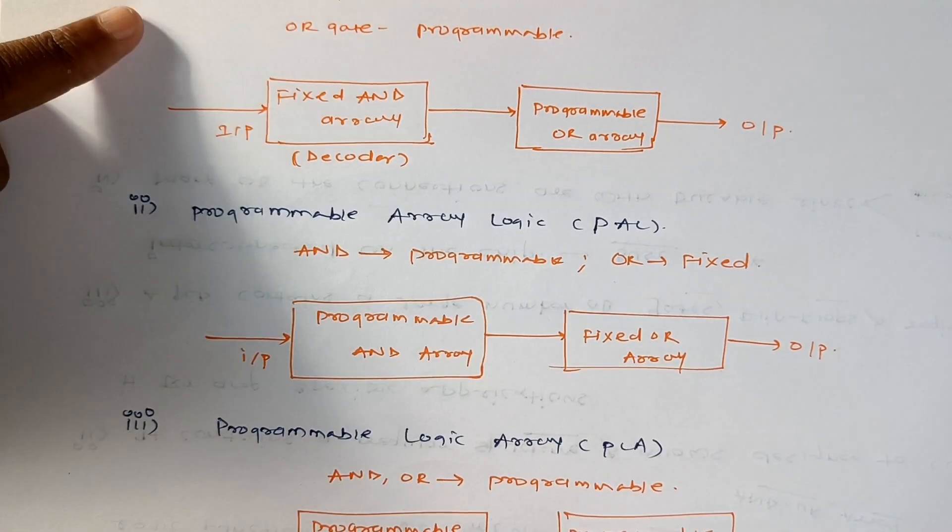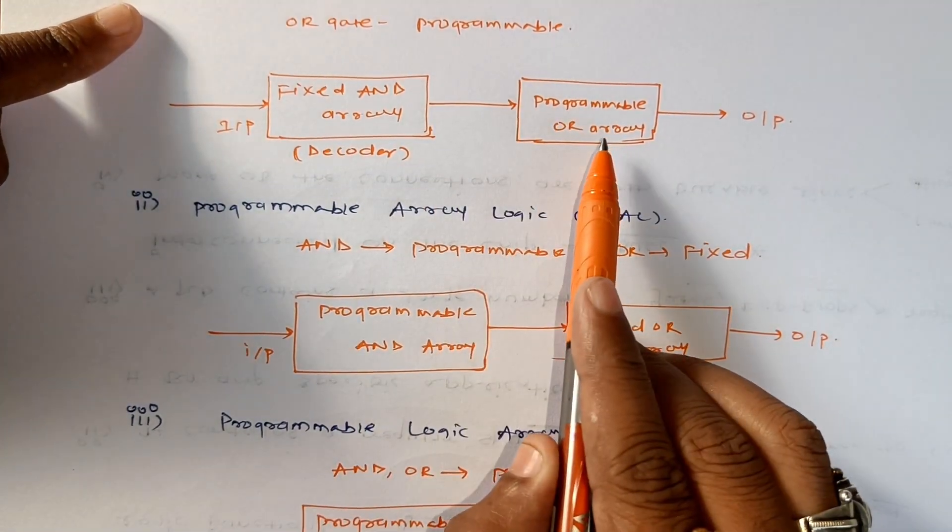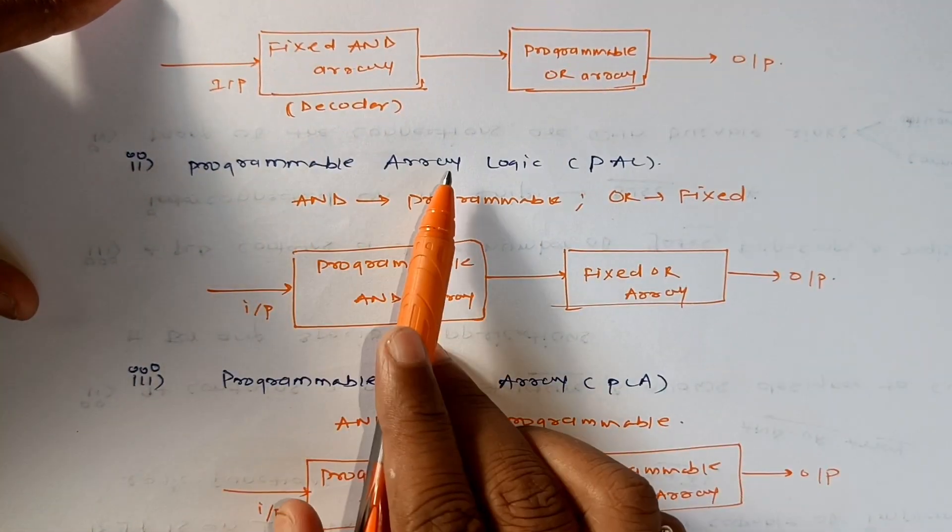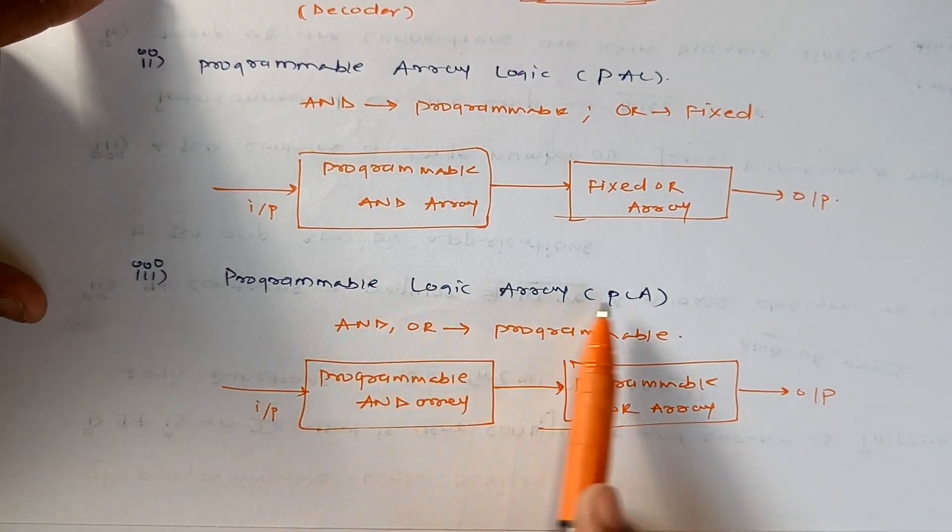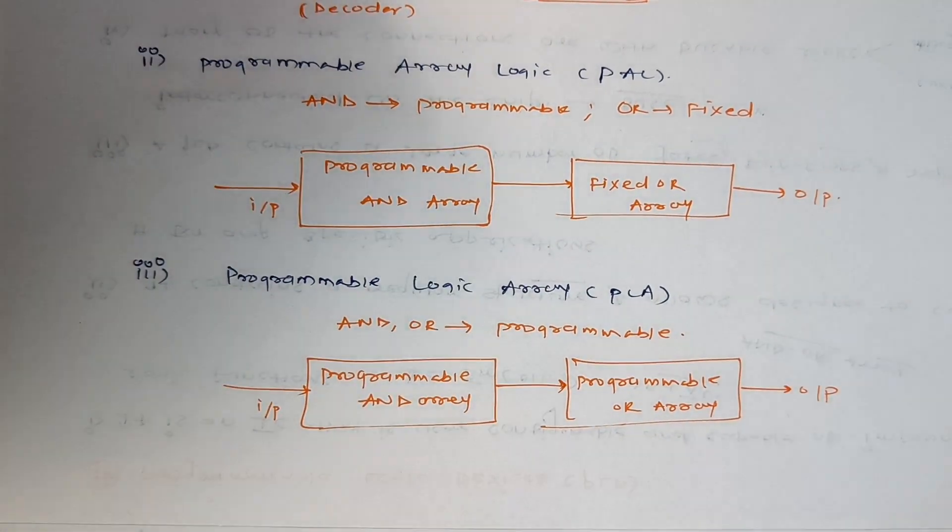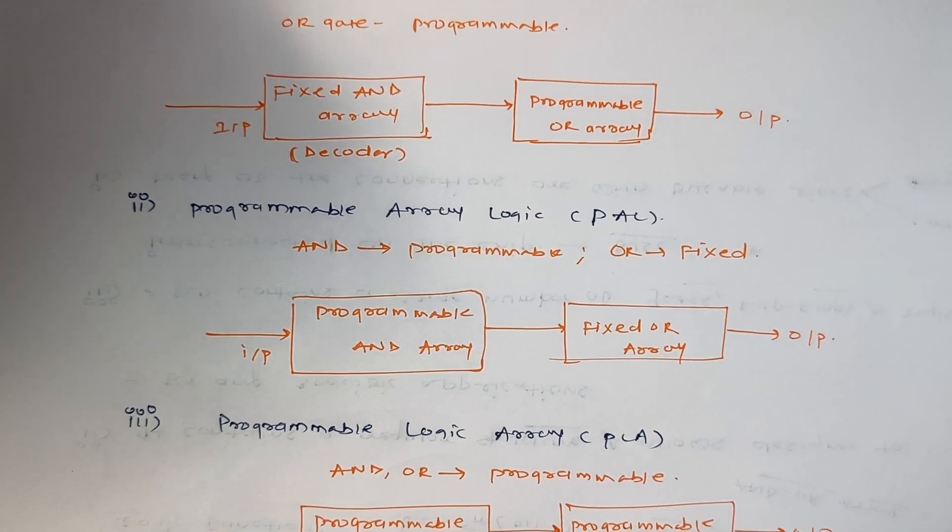Most important three types: one is PROM where OR is programmable, PAL where AND is programmable, and in case of PLA both are programmable. So these will be the types of PLDs.